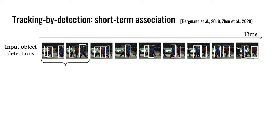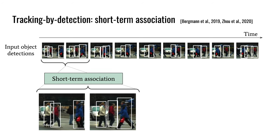Tracking over long videos effectively means solving a spectrum of problems from short to long-term association. When objects are visible, they tend to be detected in most frames. Therefore, data association is performed mostly among objects that are close in time. Several trackers focus on these short-term scenarios. Some examples are regression-based trackers, which regress offsets from previous tracks to predict their future location. While these methods can be reliable at short-term horizons, they fail under long-lasting occlusions.